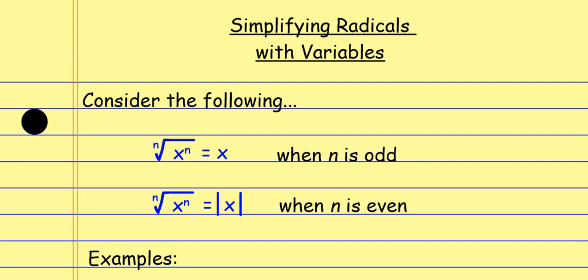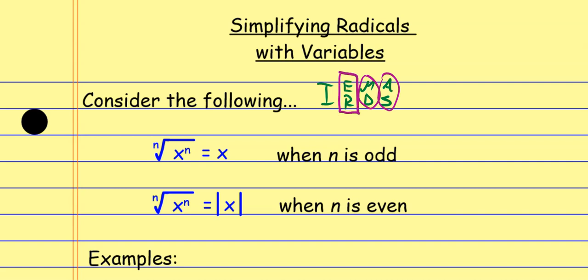As we look at something like this — consider the following. If I have the nth root of x to the nth power, the nth root and the nth power kind of cancel each other out. We already knew that. If we think about our good buddy IRMDAS: addition and subtraction cancel each other out, multiplication and division cancel each other out, and exponents and roots cancel each other out.